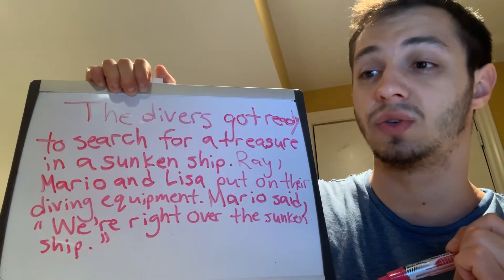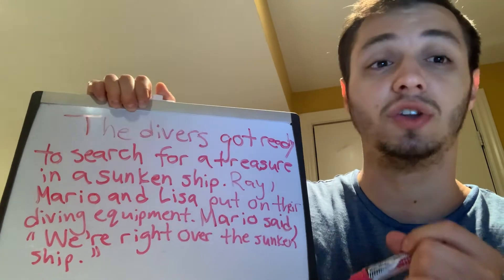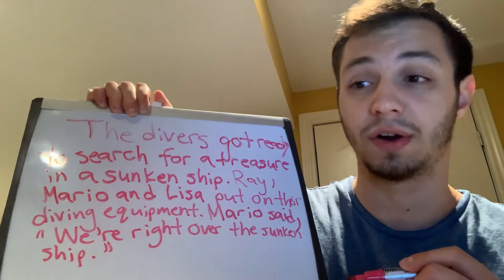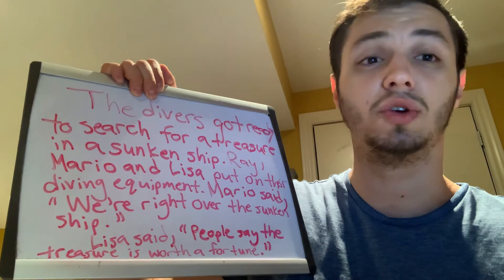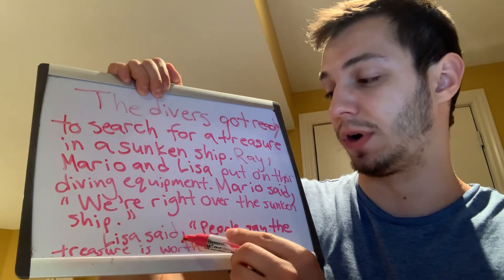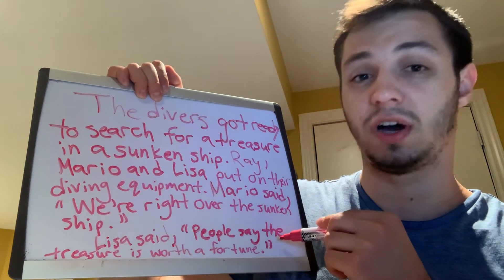The other person that said something in the first half is Lisa. Since we have a new person speaking — it's not Mario anymore — that means I'm going to have to start a new paragraph. So I'm going to start a new paragraph and write what Lisa said. Lisa said, and then I'll put my comma and quotation marks. Then she said: people say the treasure is worth a fortune. Period. And my closing quotation marks. So I had to begin a new paragraph when Lisa started to speak because a new person was speaking. We put our comma, quotation marks, and then the exact words she said, finishing with our closing quotation mark.